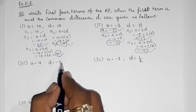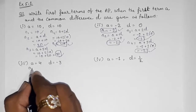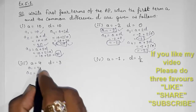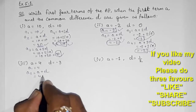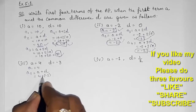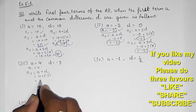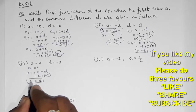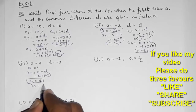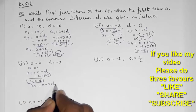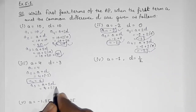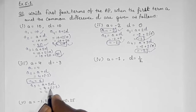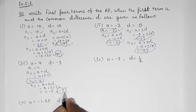Now, a = 4 and d = -3. So a1 = 4. a2 = a + d = 4 + (-3) = 4 - 3 = 1. a3 = a + 2d = 4 + 2×(-3) = 4 - 6 = -2. So the third term is -2.